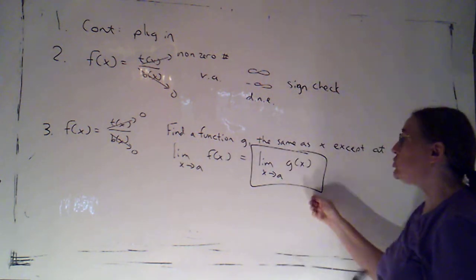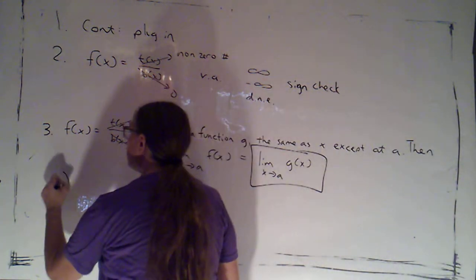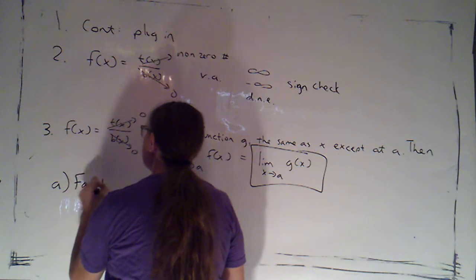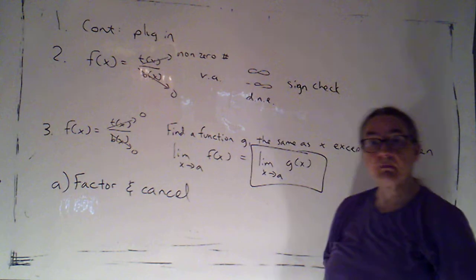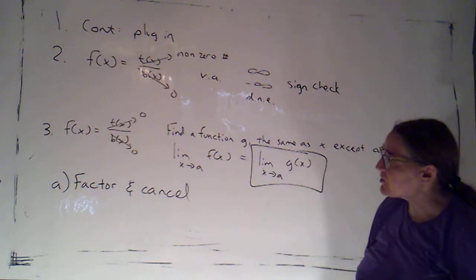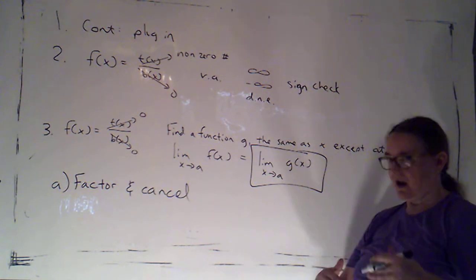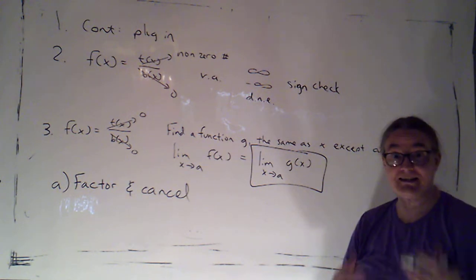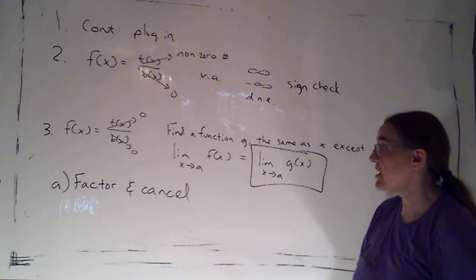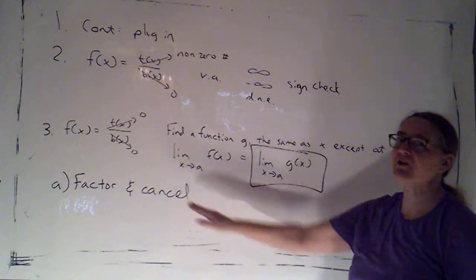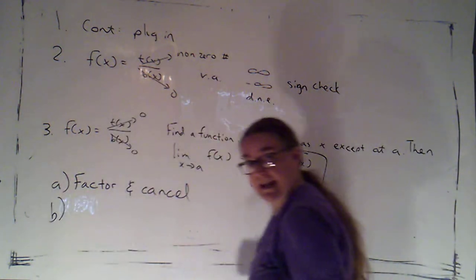We're going to have two main techniques that we use in this case. The first we saw in the last case. Sometimes we can factor and cancel. So if I can factor something out and I can cancel that factor that's making the denominator go to 0, I'm usually creating a new fraction because now whatever was not in the domain is in the domain of that new function. But I can evaluate the limit of that function.